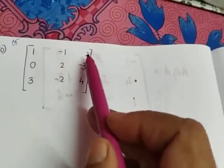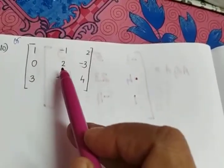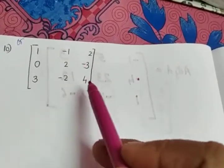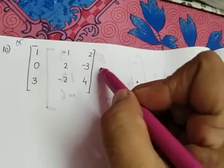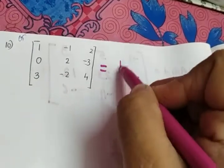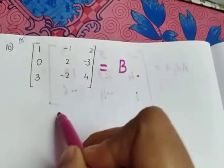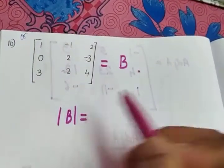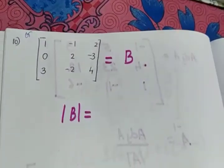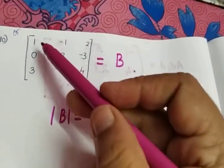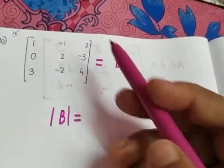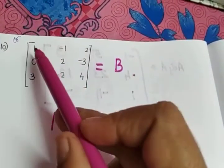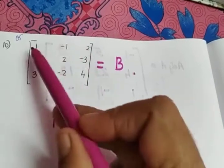The next matrix B is: 1, -1, 2 / 0, 2, -3 / 3, -2, 4. I am naming this matrix B and calculating the determinant of B. Which will be easier — a column or a row? It will be the first column, so I am starting with that.